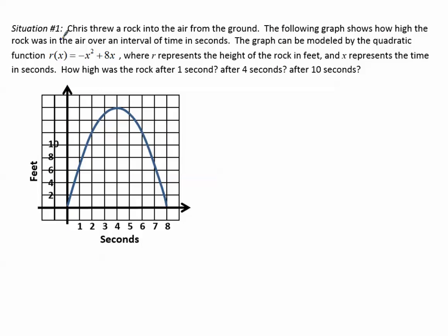Let's take a look at this situation. Chris threw a rock into the air from the ground. The following graph shows how high the rock was in the air over an interval of time in seconds. The graph can be modeled by the quadratic function r of x equals negative x squared plus 8x, where r represents the height of the rock in feet and x represents the time in seconds. How high was the rock after one second? After four seconds? After ten seconds?